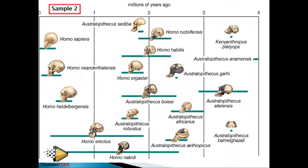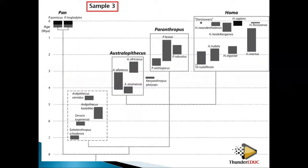If they ask when it existed, draw a line touching 2.5 million years ago. To find how long it existed, find where it started and where it ended and find the difference: 2.5 minus 1.5 gives one million years.